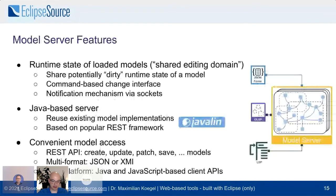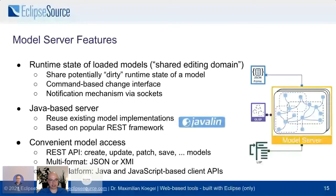The model server's main feature is providing a shared runtime state of models being edited in different editors — like a shared editing domain if you're familiar with EMF. It features a command-based change interface so editors can send commands to the model server, and notification mechanisms so editors know when other editors have updated. It's a Java-based server using existing modeling implementations. It allows convenient model access via a REST API serving JSON or XMI, with client APIs available for Java and JavaScript/TypeScript so clients can quite easily connect to it.